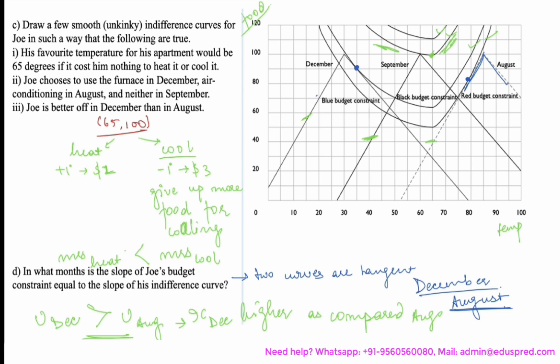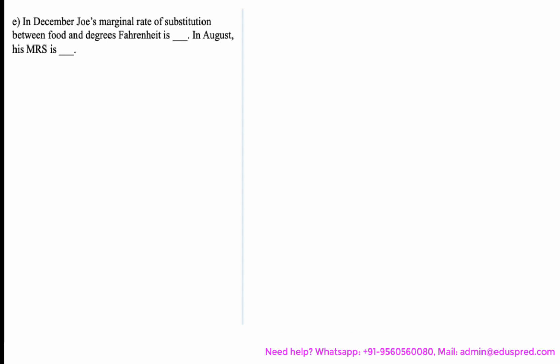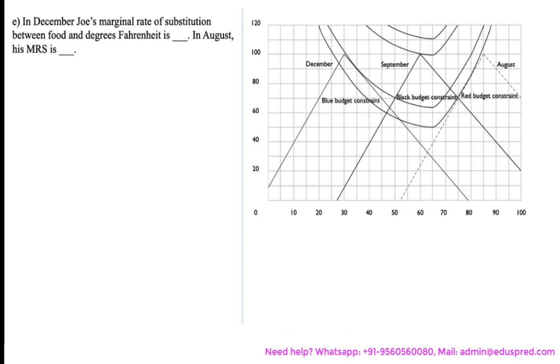Note that the indifference curve of December is higher than that of August, which confirms Joe is better off in December. Moving on to the next part: in December, Joe's marginal rate of substitution between food and degrees Fahrenheit is blank, and in August his MRS is blank. At the point of tangency, the MRS equals the slope of the indifference curve, which equals the slope of the budget line. So we calculate the slope of each budget line. In December, the slope of the budget line at the point of tangency is minus 2.